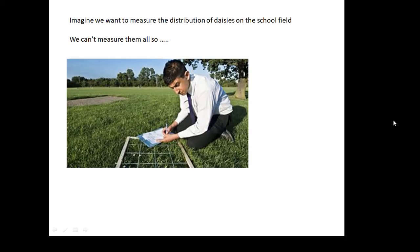Imagine we want to measure the distribution of daisies on the school field. Let's say I want to know the population of daisies. How many daisies are there on the college field? Now, we're not going to measure them all. So, what we do is we take samples. And there's different ways we can take samples. And a very common way is to use something called a quadrat. So, we take samples, for example, using a quadrat.